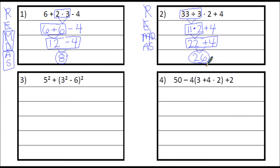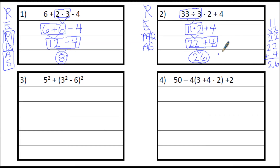This is what your order of operations should look like. But if you have to do something like 11 times 2 and you can't do that in your head, you need to do that work on the side of your paper, separate from your order of operations or algebraic work showing each of those steps.